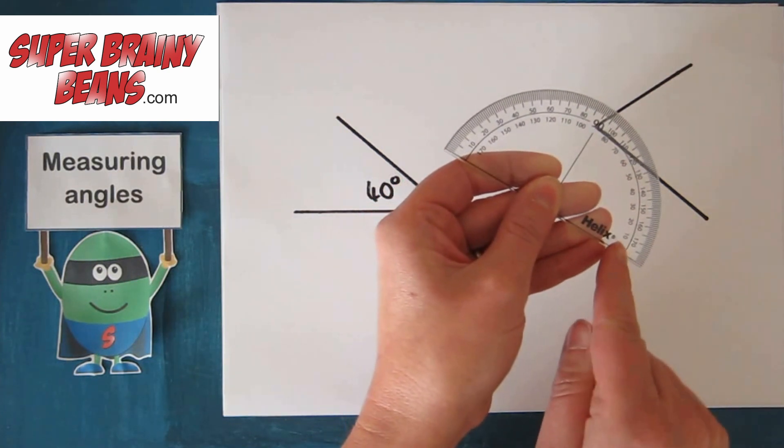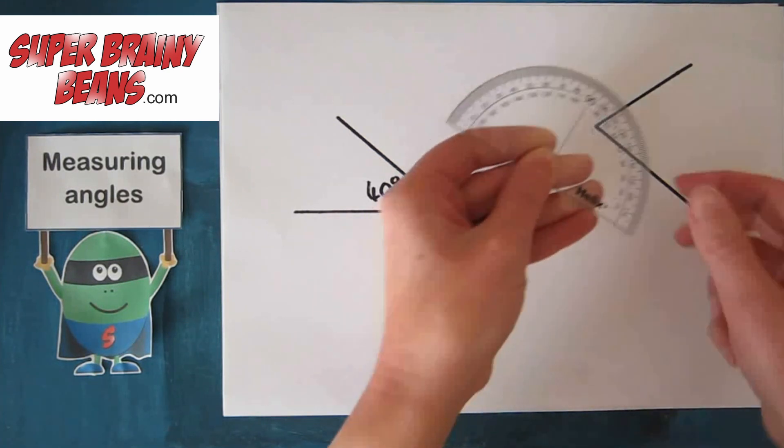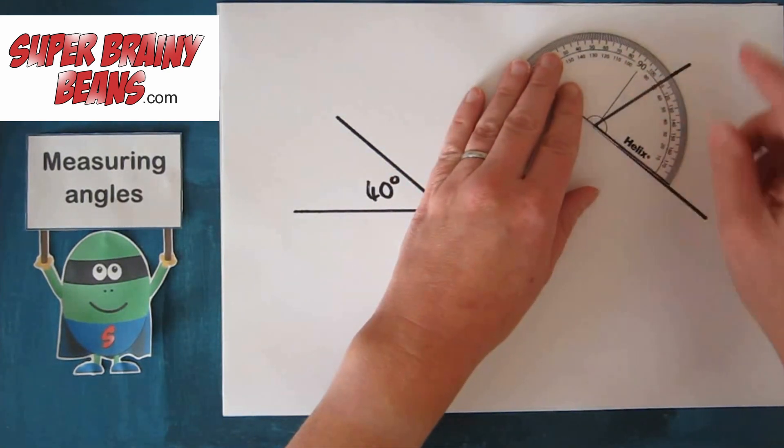And then there's a middle line here. So if you're using it the other way around, it's 10, 20, 30, 40, going this way. So we can use an angle any way around.